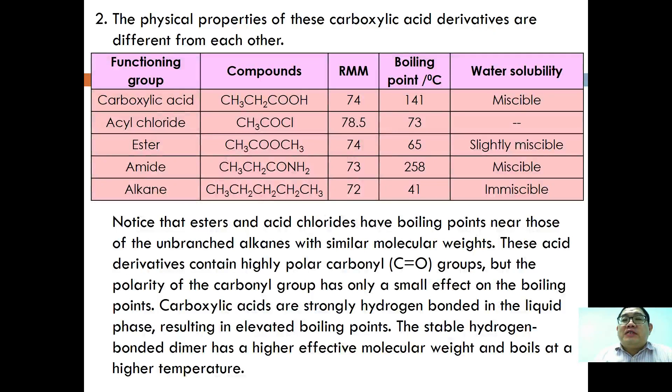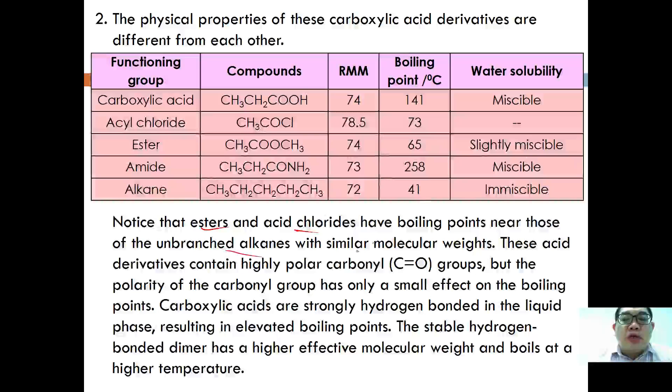The physical properties of carboxylic acid derivatives differ for each case. From the table you can see various comparisons in terms of boiling point and melting point. Note that esters and acyl chlorides have boiling points near those of unbranched alkanes because all of them are considered non-polar molecules.